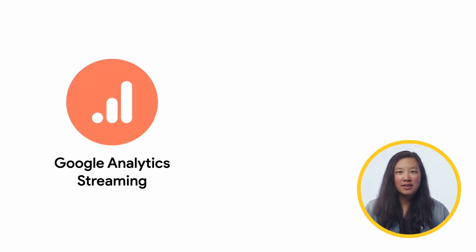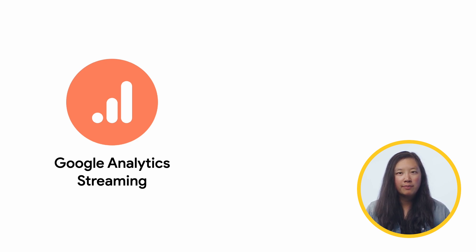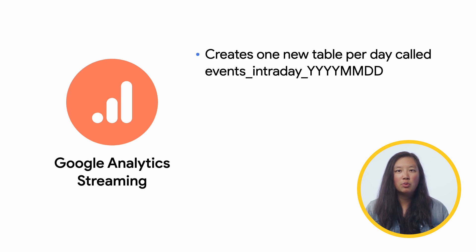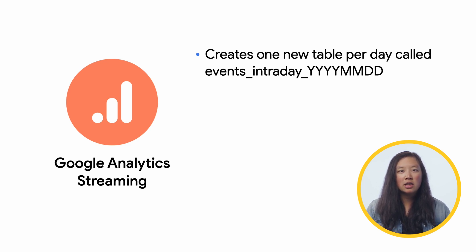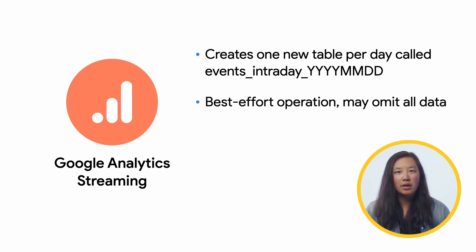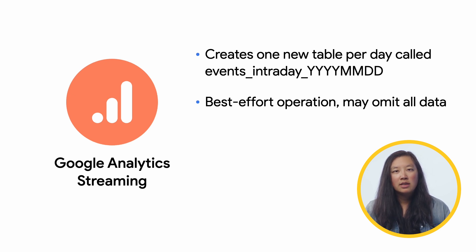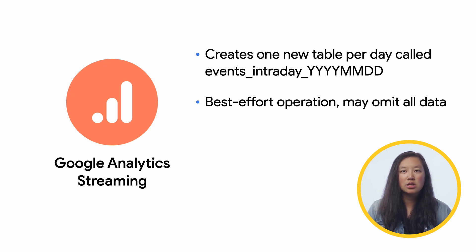For Google Analytics streaming, BigQuery has more recent information you can analyze about your users and their traffic on your property. For each day, streaming export creates one new table named events_intraday and then the date, which is an internal staging table that includes records of session activity that took place during the day. Streaming export is a best-effort operation and may omit all data for reasons such as the processing of late events or failed uploads. Data is exported continuously throughout the day, and this table can include records of a session when that session spans multiple export operations. The table is eventually deleted when the daily export is complete.